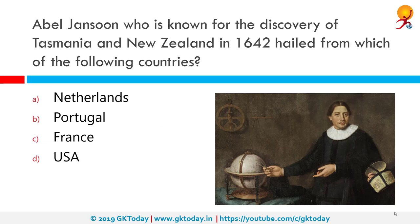Abel Janszoon Tasman, known for the discovery of Tasmania and New Zealand in 1642, came from which country? The correct answer is the Netherlands. Abel Janszoon Tasman was a Dutch seafarer, explorer and merchant best known for his voyages of 1642 and 1644 in the service of the Dutch East India Company. He was the first known European explorer to reach the islands of Van Diemen's Land and New Zealand, and to sight the Fiji Islands.